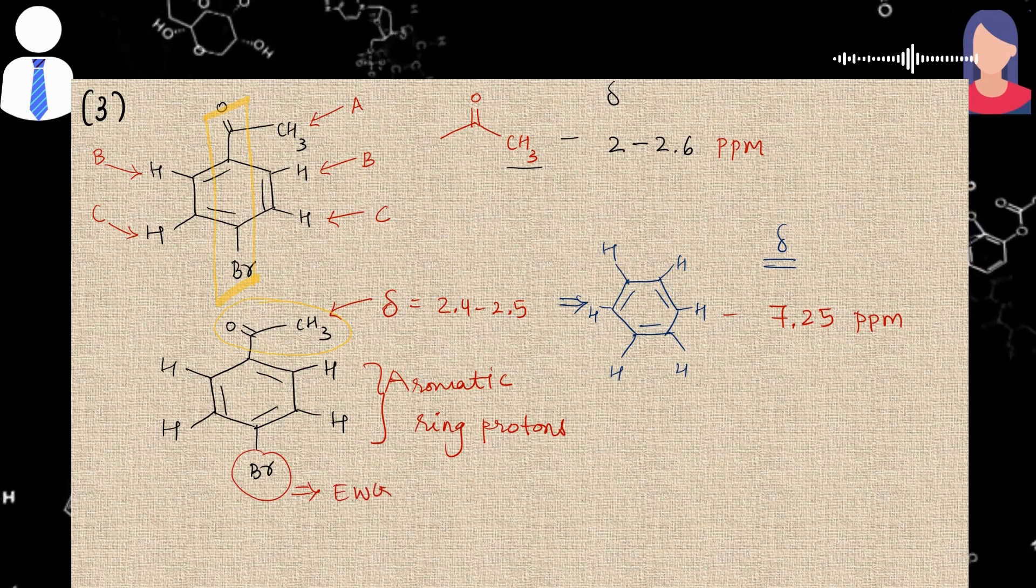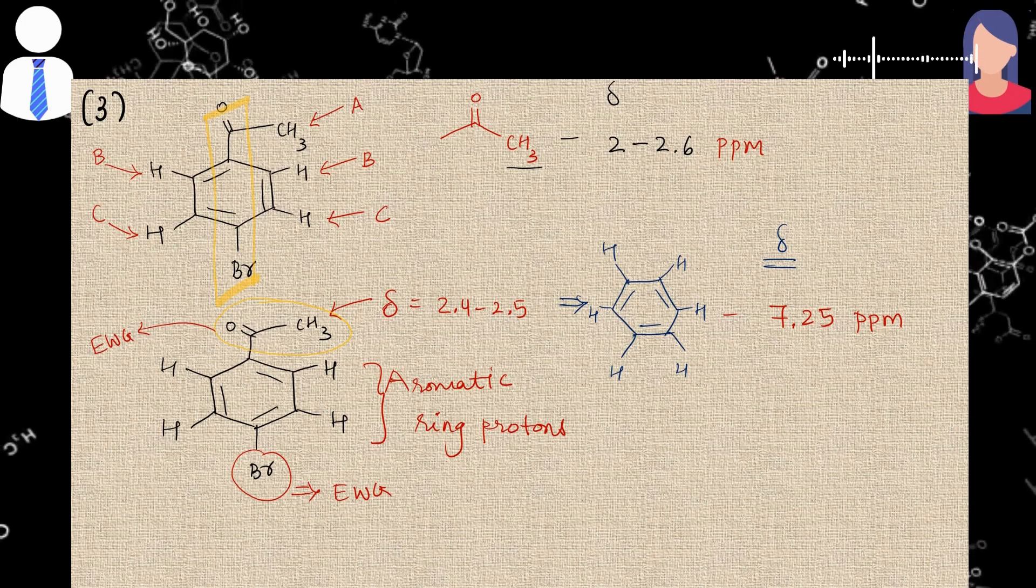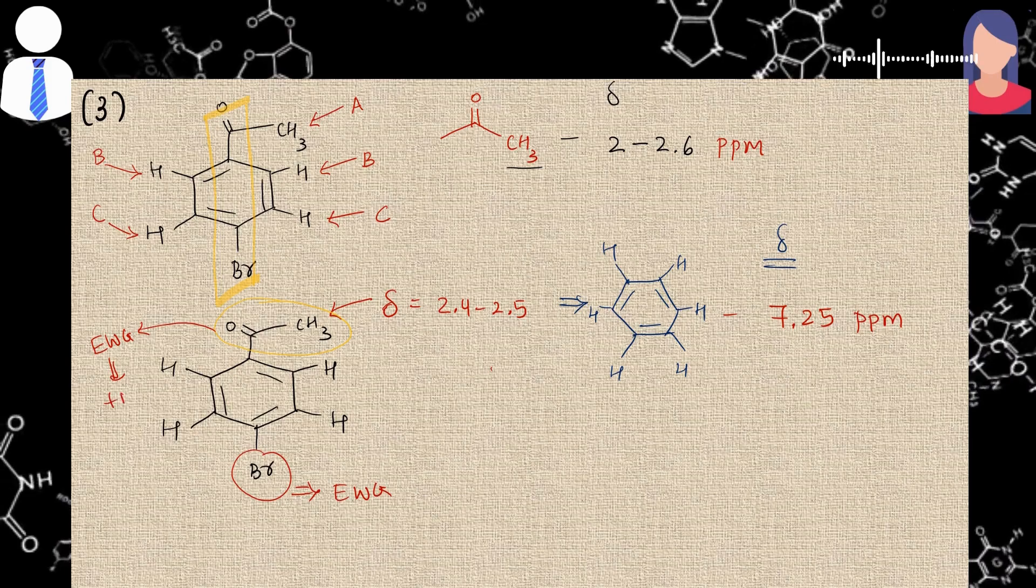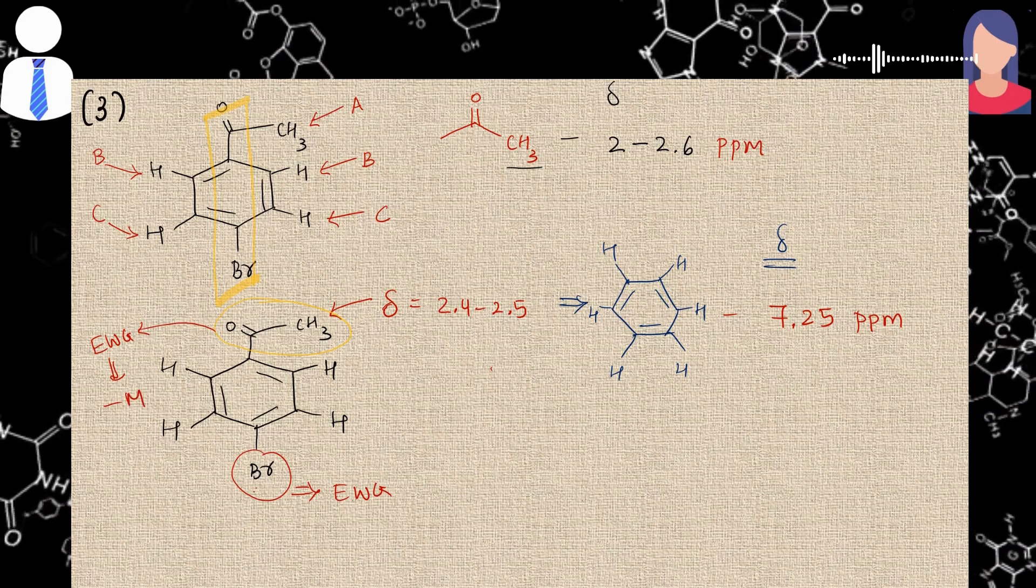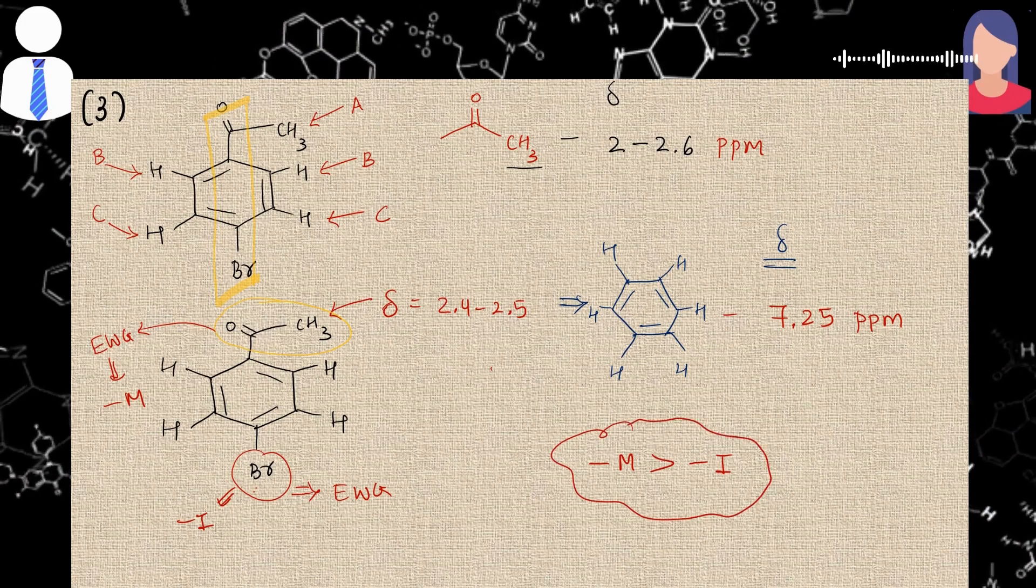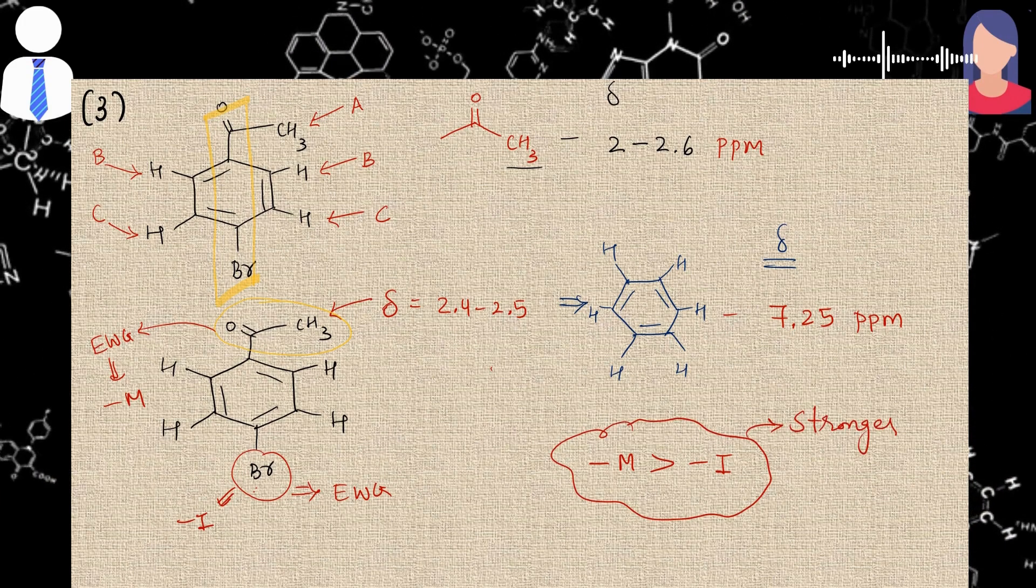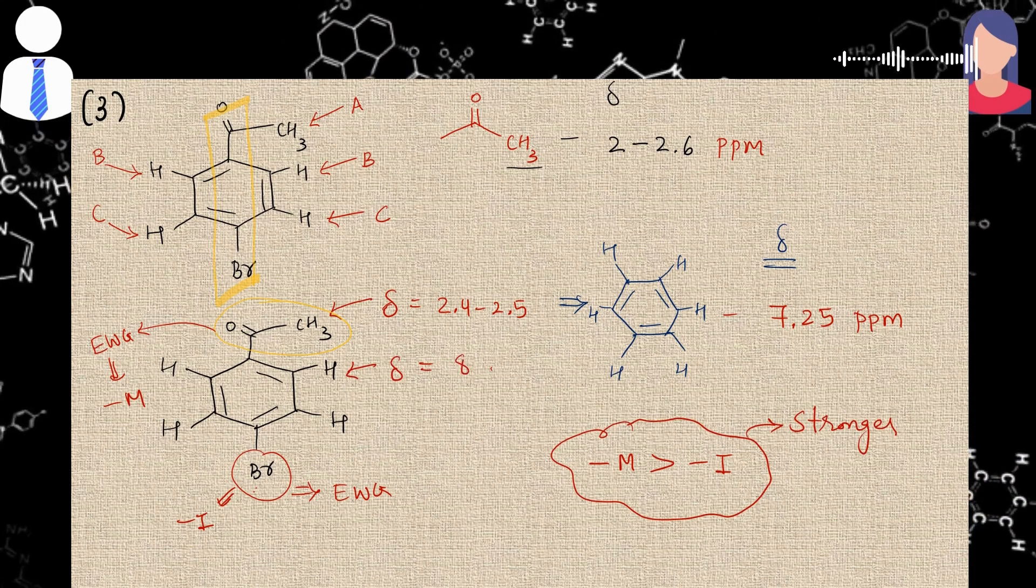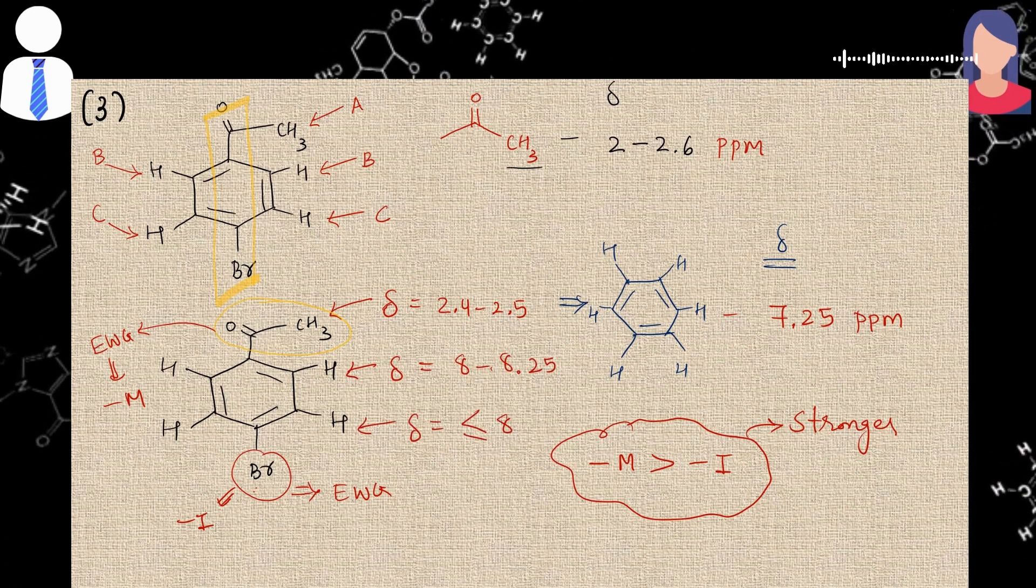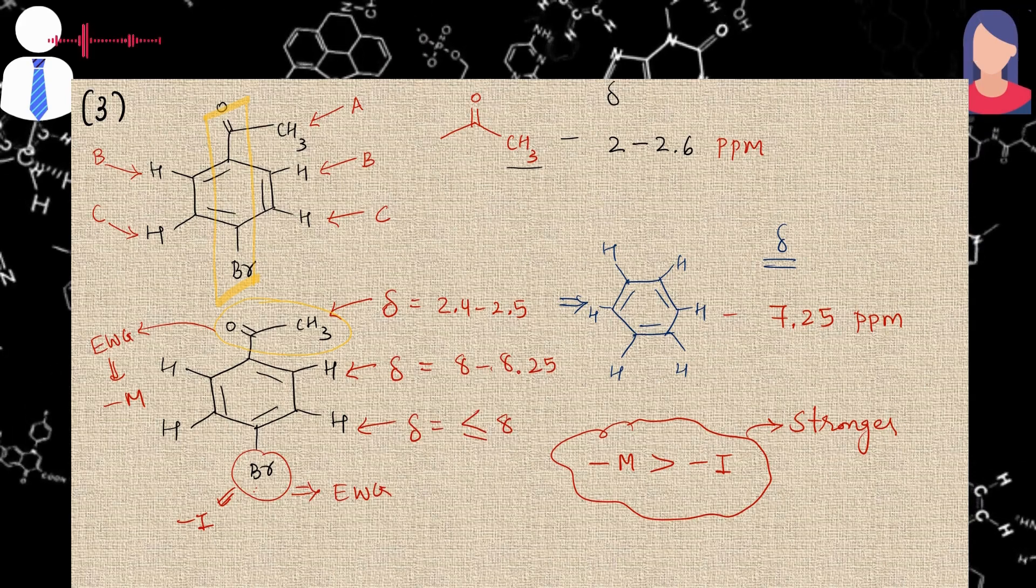So here on the benzene ring both the substituents are electron withdrawing groups, which makes these protons highly deshielded by withdrawing its electron density. So its chemical shift value must be greater than 7.25. Now acetyl group shows minus M effect, so it is a stronger electron withdrawing group than the bromide. And the proton present at ortho position to acetyl is most deshielded, so its chemical shift value must be around 8 to 8.25. And for the meta proton it must be less than 8 or equal to 8.